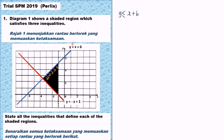For this second straight line, y equals negative x plus 1. We check the shaded region — it is above the straight line, so we change to greater than or equal to. Because the line is also a solid line, the second inequality is y greater than or equal to negative x plus 1.